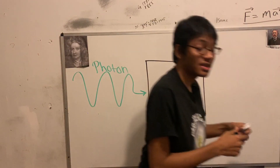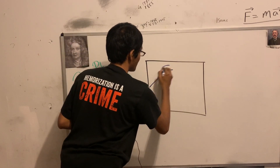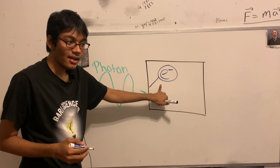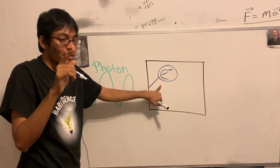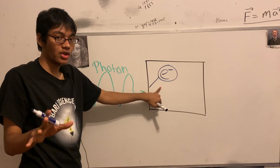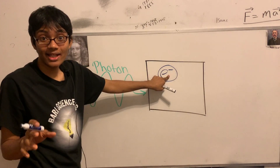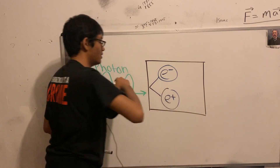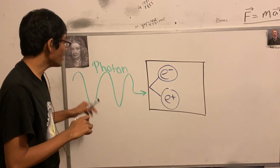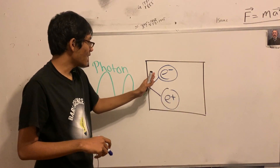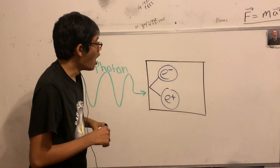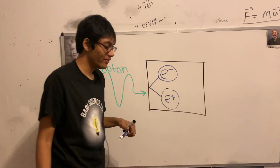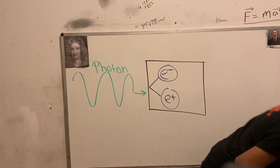What else do we have to see alongside the electron? A proton would conserve charge, but nature creates particles like the electron together with their antiparticle. The antiparticle of the electron is the positron. So when I shine my laser beam into the box, an electron and a positron are created inside — too small to see with the naked eye, but they are there.